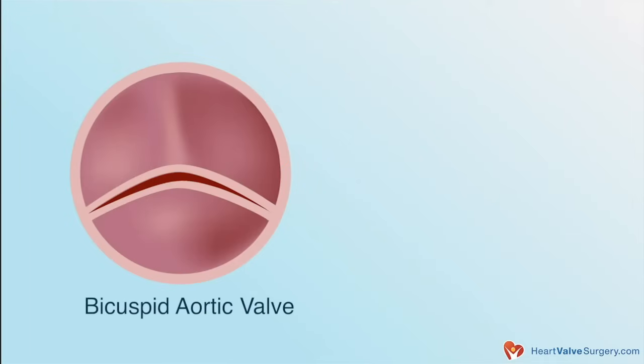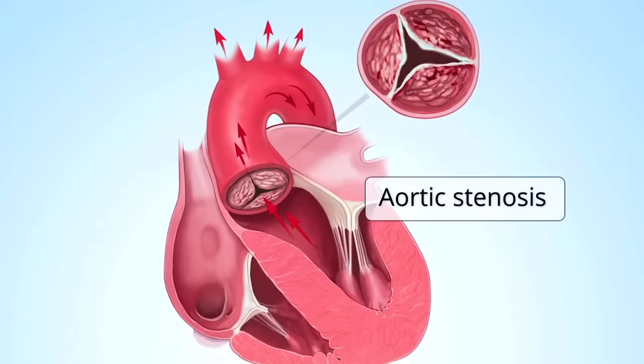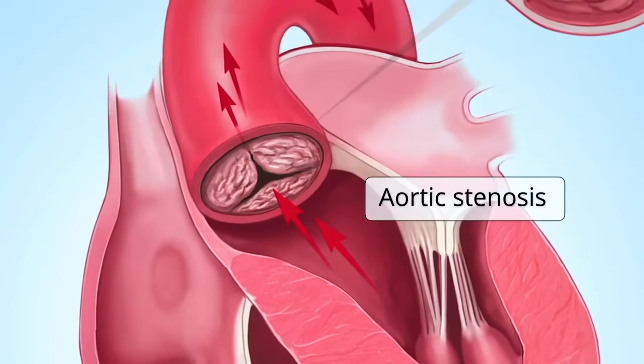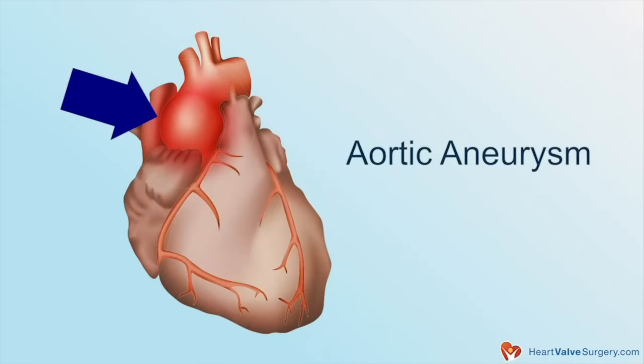A bicuspid aortic valve has two cusps or two leaflets instead of the usual three. Approximately 1% of the population has a bicuspid aortic valve. There are three heart problems that could potentially be associated with it. The first is a narrowing of the valve, also known as aortic stenosis, caused by accelerated calcification, typically seen in patients in their 50s and 60s. The second is aortic regurgitation, or leakiness of the valve, causing backward flow of blood into the heart. The third is that bicuspid aortic valves are very commonly associated with aortic aneurysms — enlargements or dilations of the aorta — putting patients at risk for aortic dissection or rupture, two life-threatening diseases.